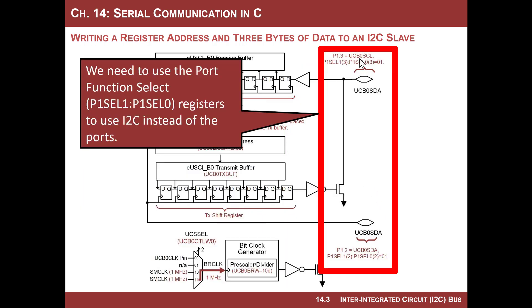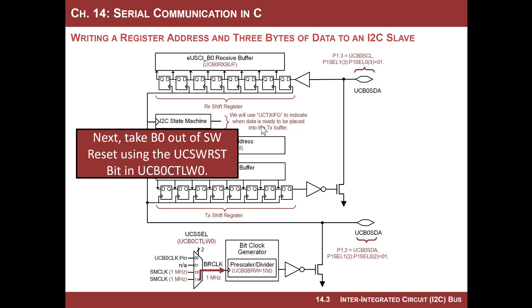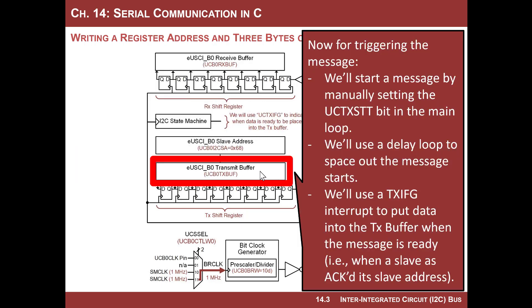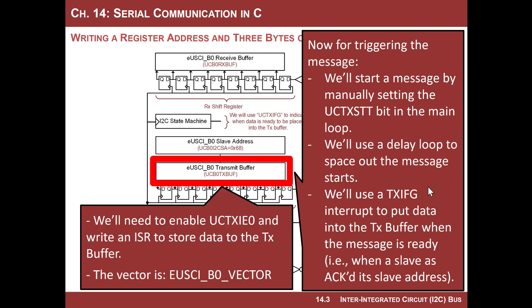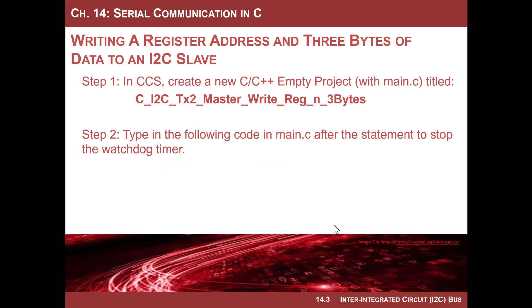We need to choose port 1 bit 2 and bit 3 to be the clock and data for I2C. We'll take it out of software reset and manually start the transmission. In the interrupt service routine we'll continually put four bytes into the transmit buffer. We're going to use the TXIE interrupt, which goes to the same vector.